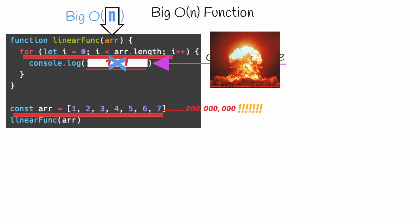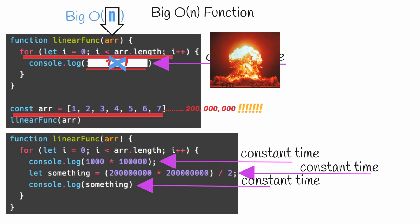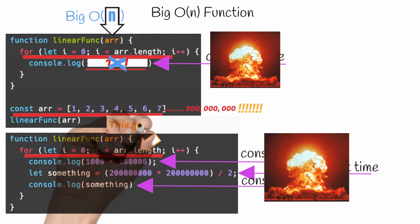In fact, even if the function looked like this, we would still ignore all of these constants and say that this function scales linearly or is Big O of n.